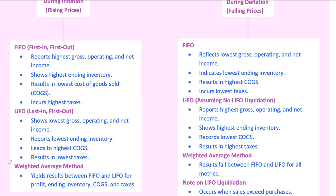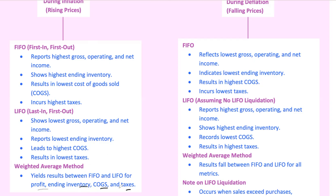Then there's the weighted average method, which smooths things out by averaging the cost of all inventory items. As a result, the financial metrics — profits, ending inventory, COGS, and taxes — fall somewhere between FIFO and LIFO.